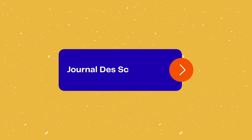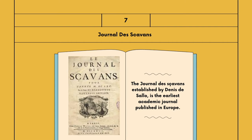The Journal Descobon, established by Denise Desaglio, is the earliest academic journal published in Europe.